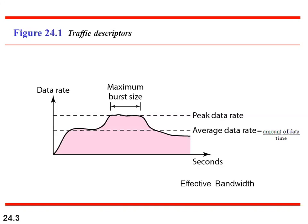However, if the duration of peak data rate is long — that is, the value of maximum burst size is high — then the retransmitted packets will again increase data traffic in the network, resulting in discarding of more packets. This will make the sender retransmit again, more packets will be discarded, and this will make conditions in the network worse. Effective bandwidth is the amount of bandwidth that the network needs to allocate, calculated using average data rate, peak data rate, and maximum burst size.